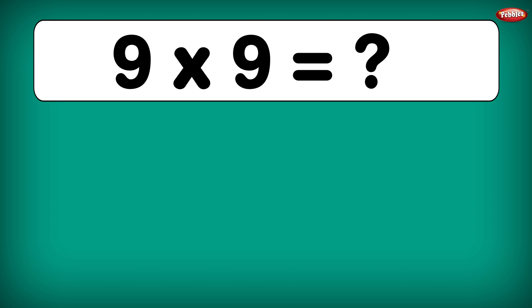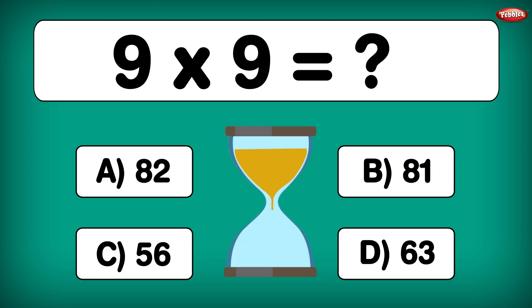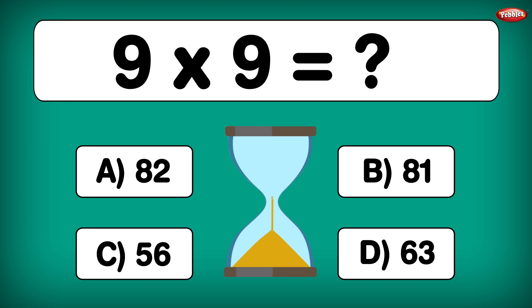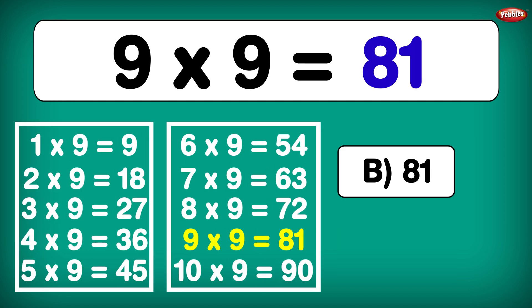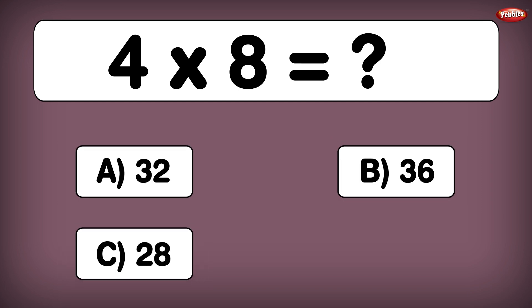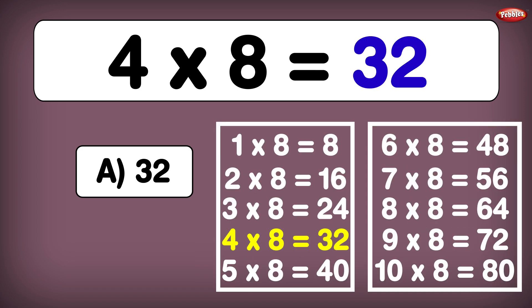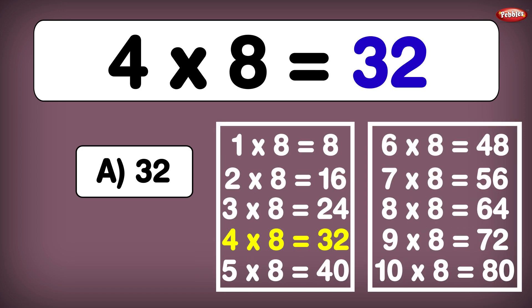9 times 9 is equal to... 9 times 9 is equal to 81. 4 times 8 is equal to... 4 times 8 is 32.